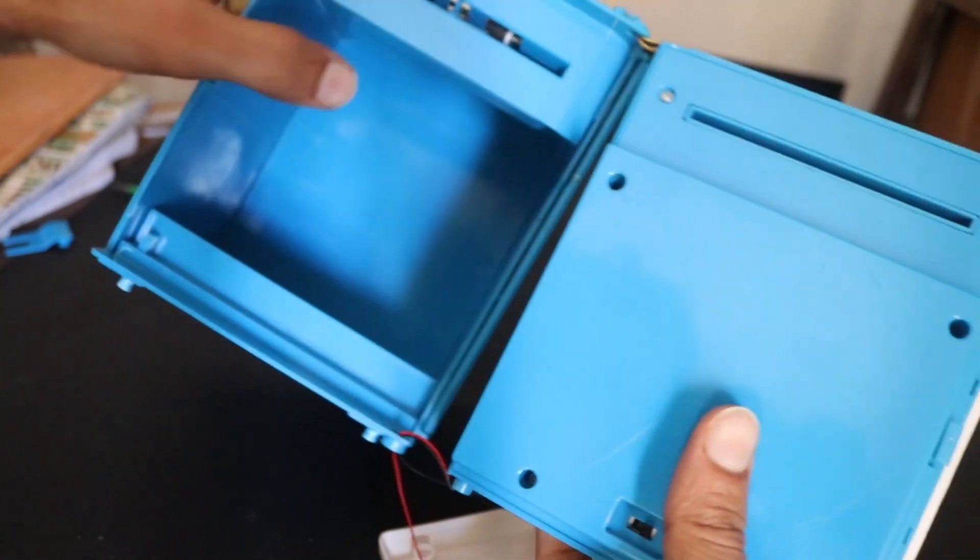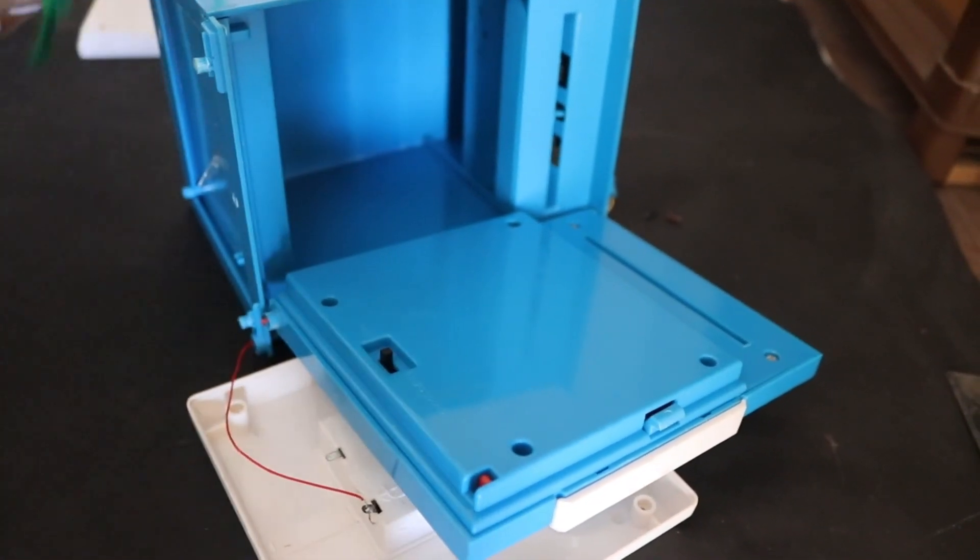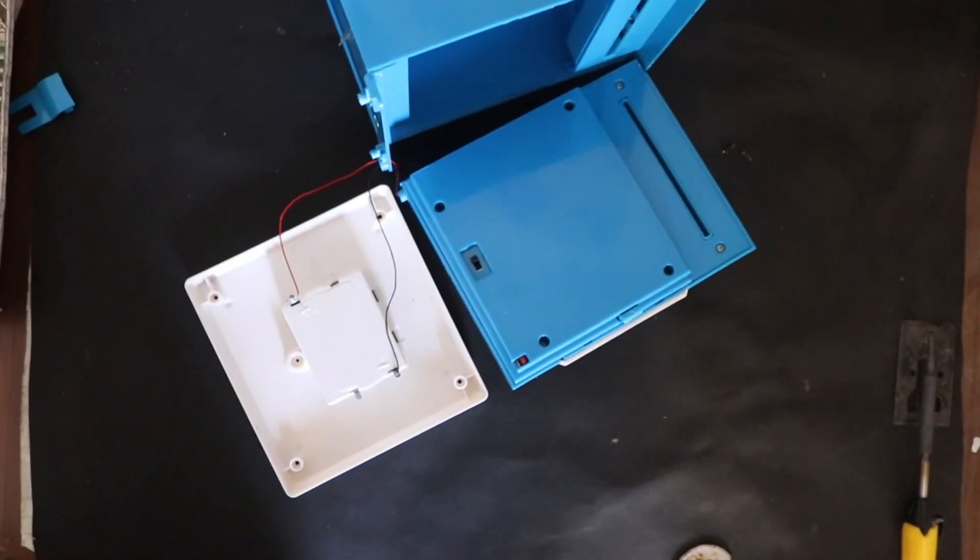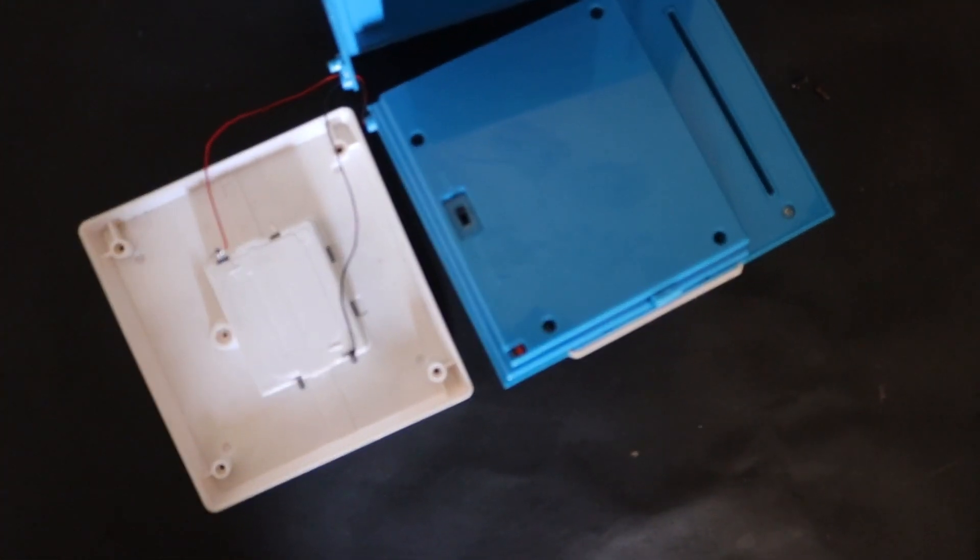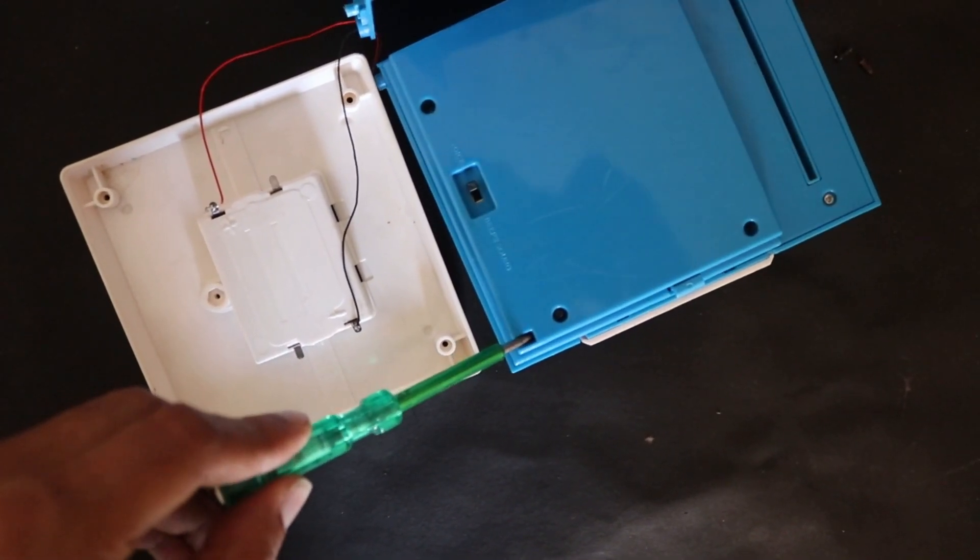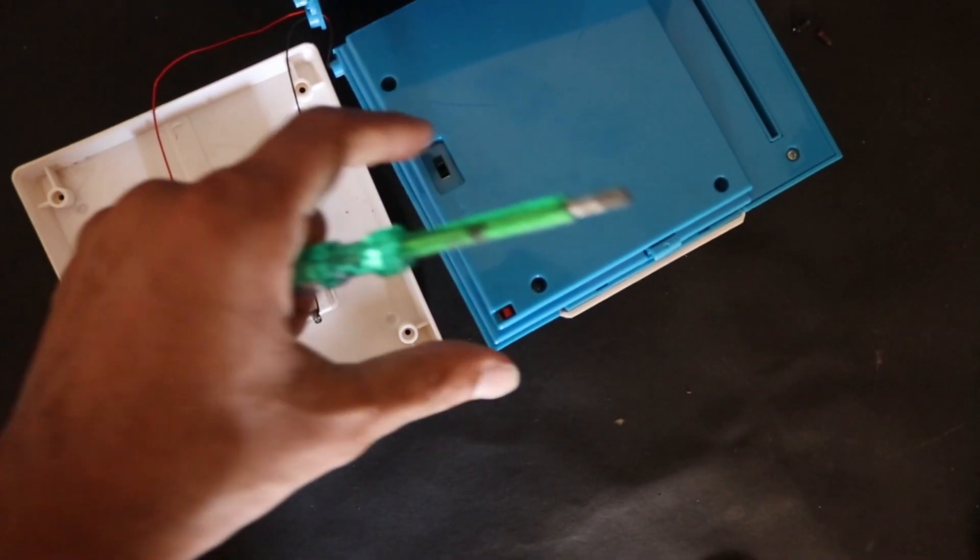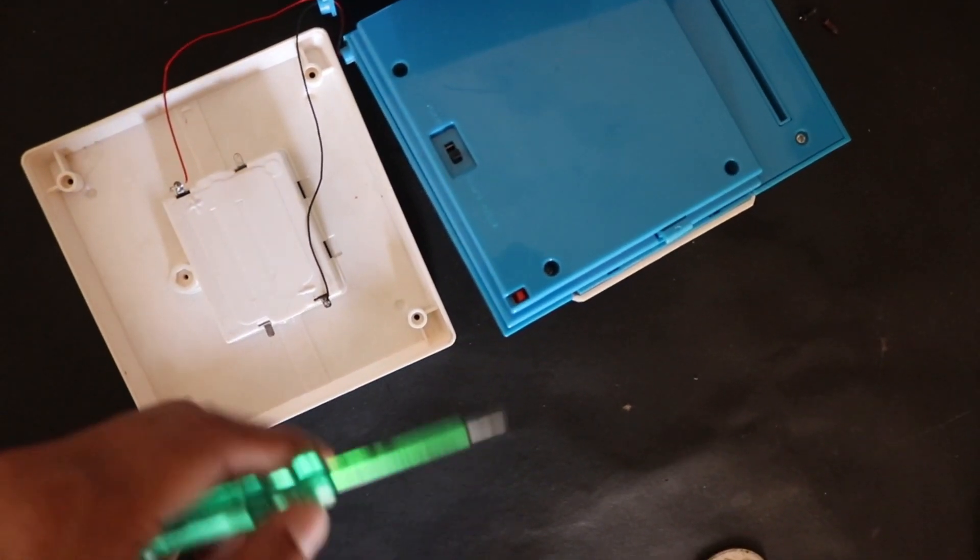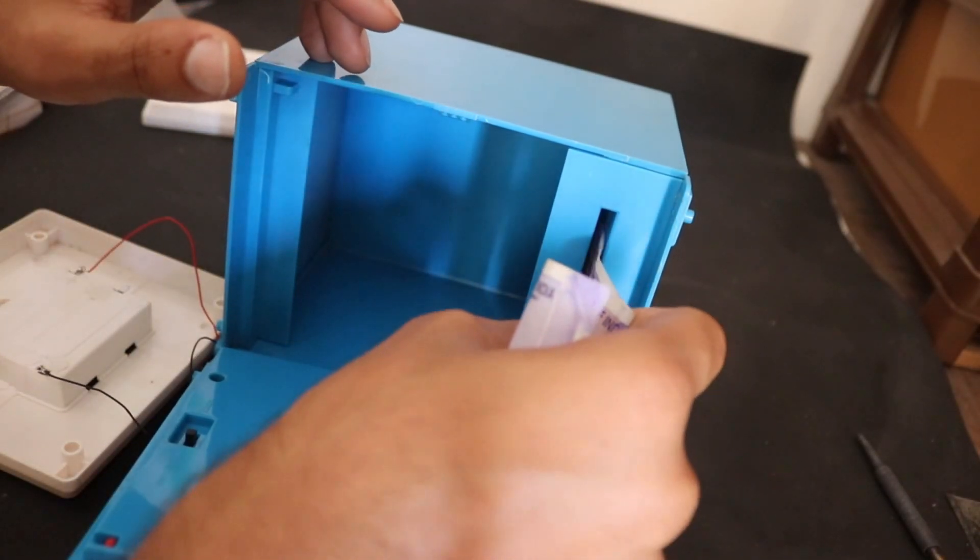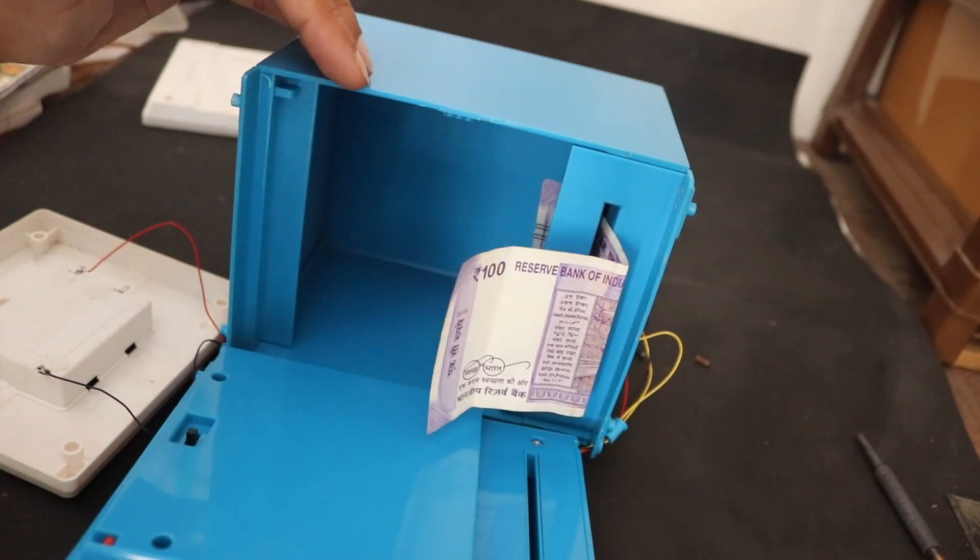So after doing a lot of effort I have opened it. Here we got these two switches - one of them is to trigger the speaker and the other one is to turn on and off the voice. Here the speaker is working but not the motor and the lock.